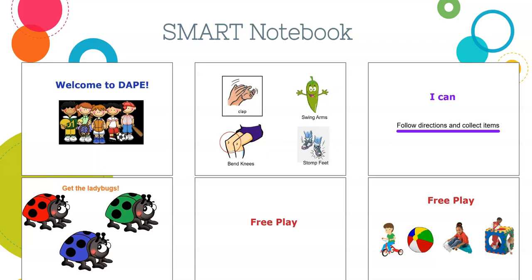The warm-up had four parts: clap, swing your arms, bend your knees, and stomp your feet. Some students could only do clap and swing their arms but not bend their knees or stomp their feet, so I made modifications for each student with help from my education assistants. After skill work, we returned to the carpet squares. I had an I Can statement — 'I can follow directions and collect items' — and then a game where students collected Velcro ladybugs.